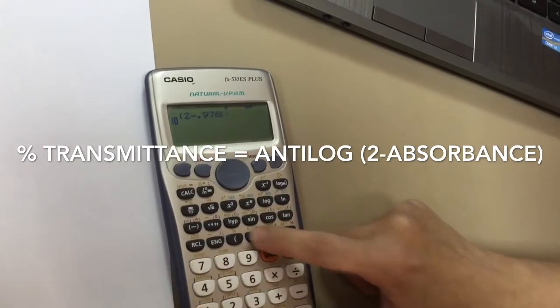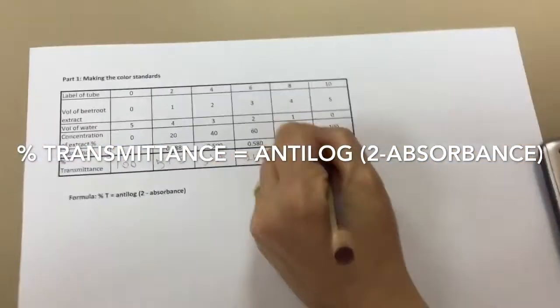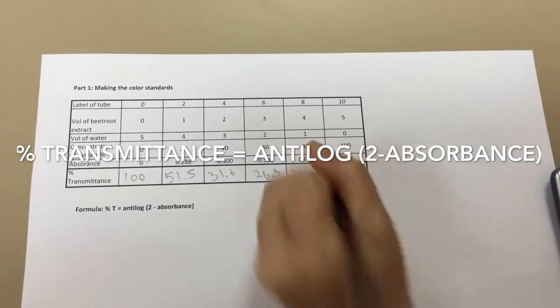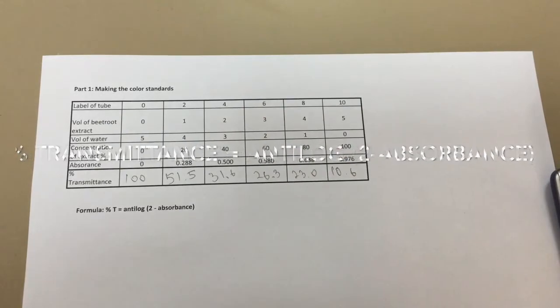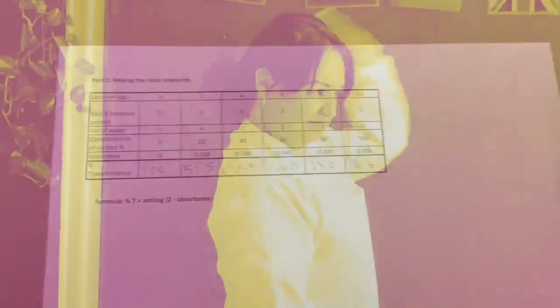The calibration curve can then be used to find the unknown. We can also use the calibration curve as an arbitrary measure to measure the permeability of beetroot cell membranes.